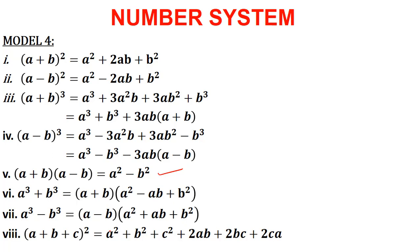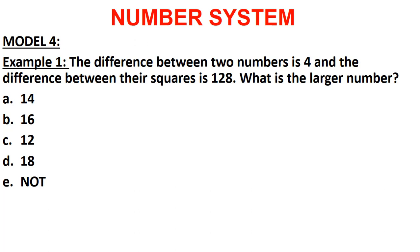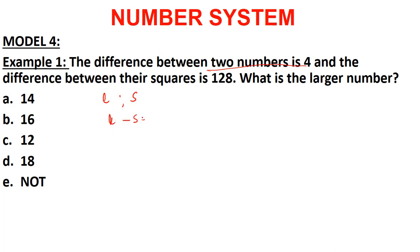Based on these formulae we will discuss some important questions. The first example: the difference between two numbers is 4 and the difference between their squares is 128. What is the larger number? Let us take the two numbers as l (larger) and s (smaller). So the first condition gives us l - s = 4.